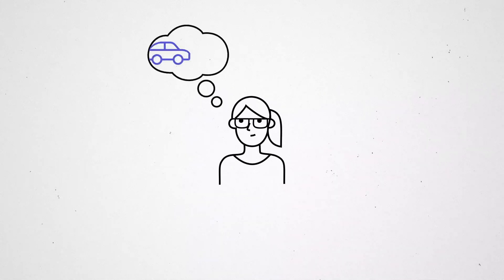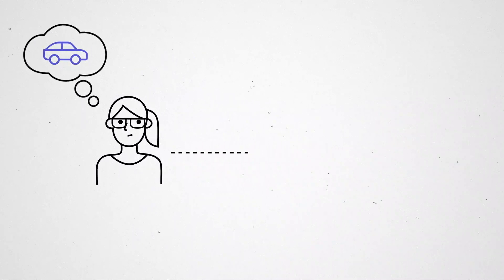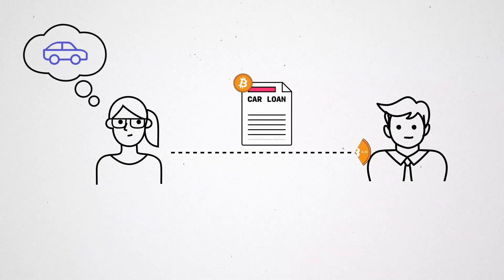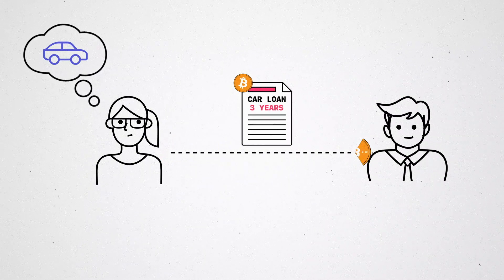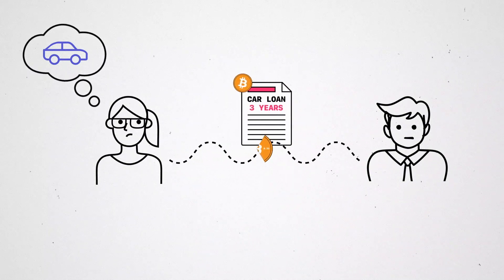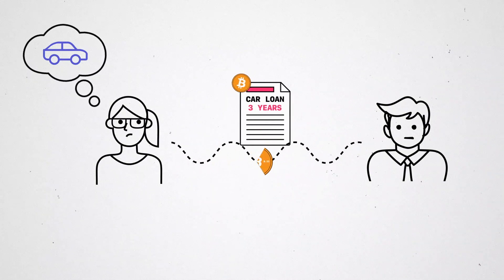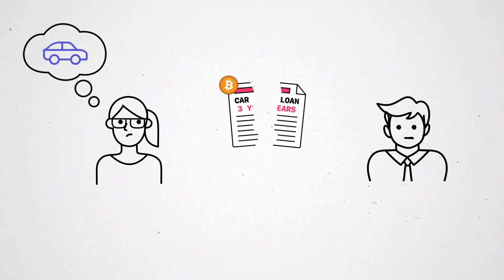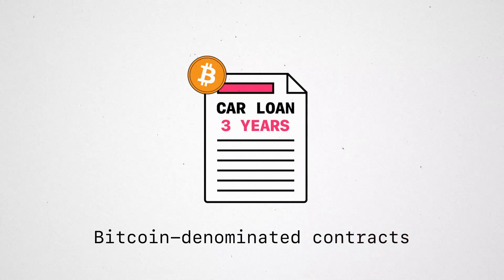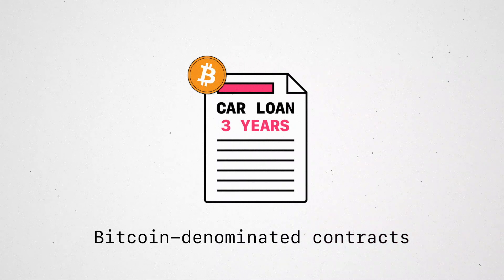Imagine Alice wants to buy a car. To purchase her new car, she borrows one Bitcoin to be paid back in annual installments over the course of three years. Her auto contract is not stable. Because Alice's annual payment obligation of 0.33 Bitcoin fluctuates wildly in value, this can severely hurt Alice or her lender. This auto loan and Bitcoin-denominated contracts in general have a high risk of default.